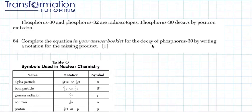We will start by writing our parent atom which is Phosphorus-30. Let's go ahead and take a look here. The symbol for Phosphorus is P.